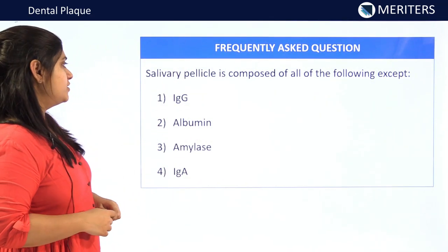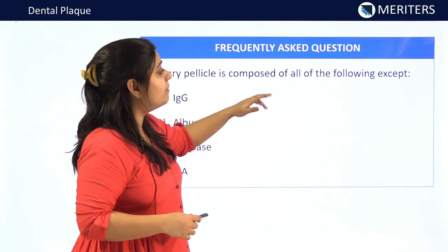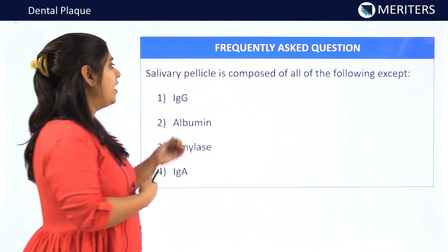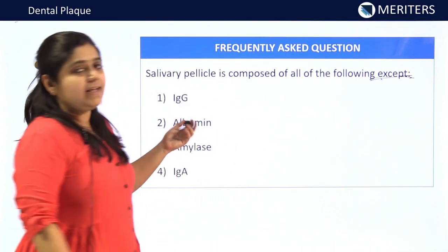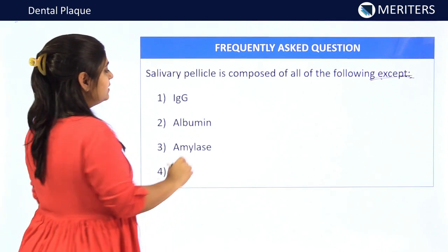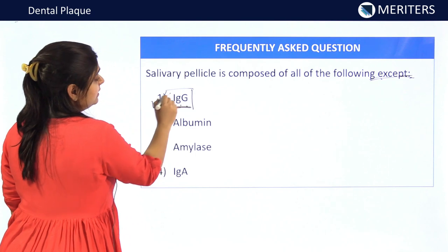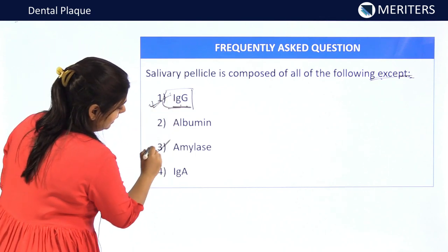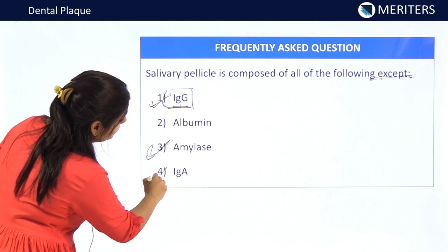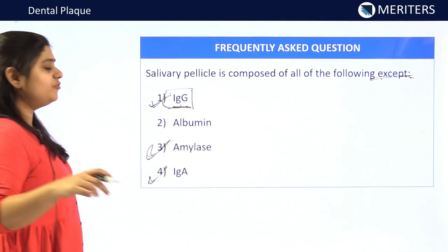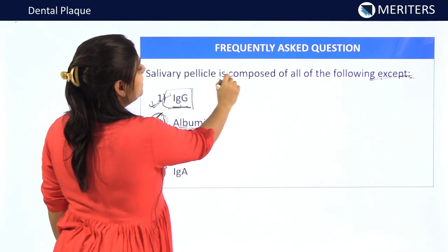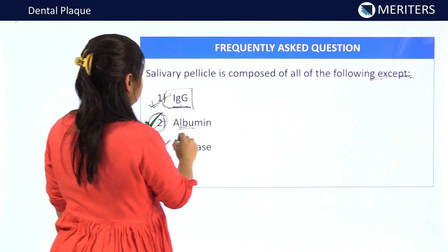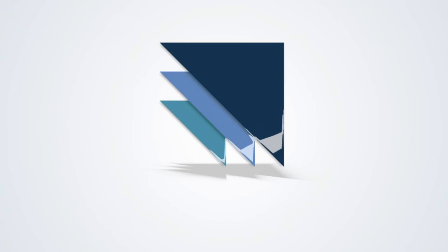The second MCQ question: Salivary pellicle is composed of all of the following except — as discussed, salivary pellicle consists of immunoglobulin G, amylase, and immunoglobulin A. The option we are left with is albumin. So the answer to this question is albumin. Salivary pellicle is composed of all of the following except albumin.